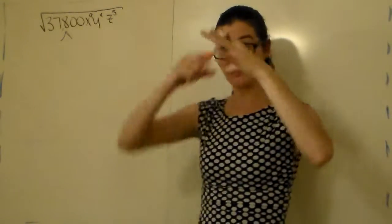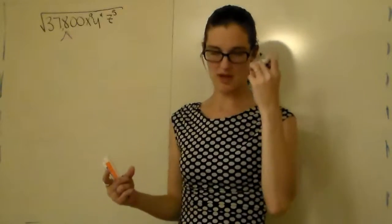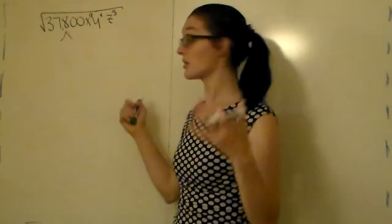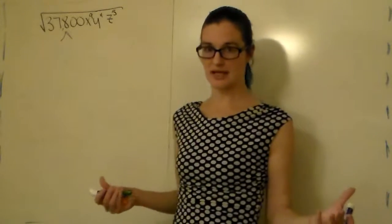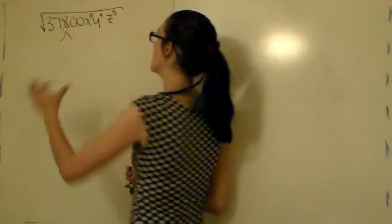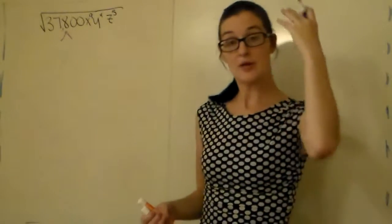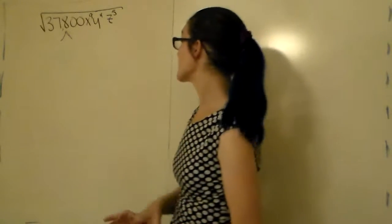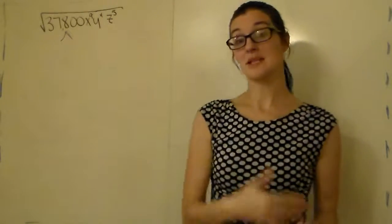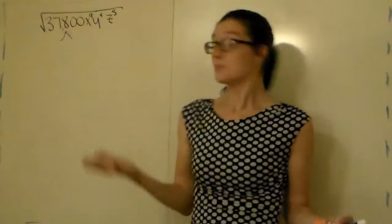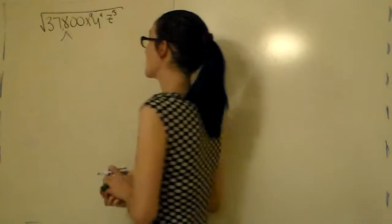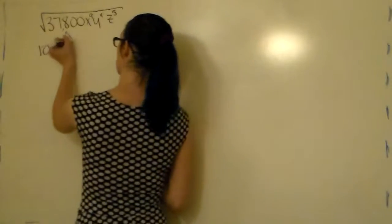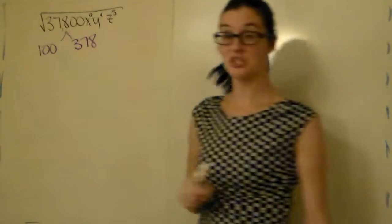I'm going to use a factor tree because my mind organizes things visually. Your mind may not work the same way — you may not like factor trees, and that's perfectly fine. When I break 37,800 into a factor tree, I notice it ends in two zeros. So right off the bat I can divide it by 100, because two zeros are in 100. So 37,800 divided by 100 gives us 100 times 378.